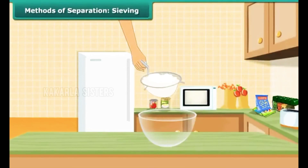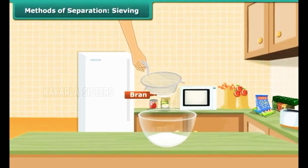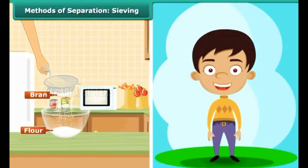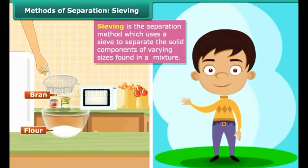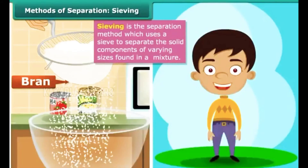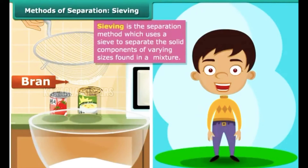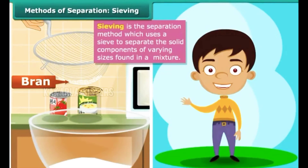Have you seen how your mother removes bran and other impurities from flour? They separate the coarse bran from the fine flour with the help of a sieve. This technique of using a sieve to separate the solid components of different sizes in a mixture is known as sieving. In this method, the mixture is placed on the sieve and shaken. The smaller particles pass through the holes of the sieve to the container placed below and are thus separated from the bigger particles that are retained in the sieve.